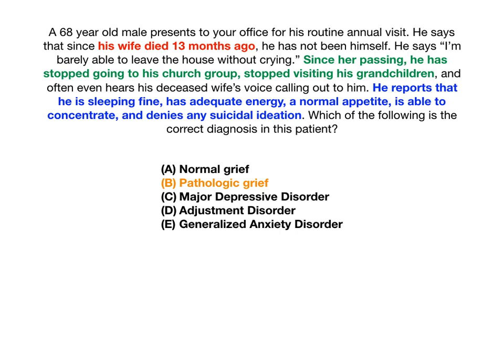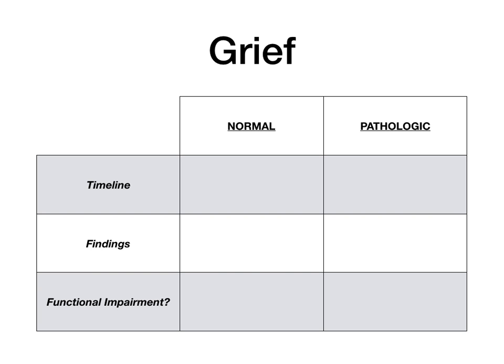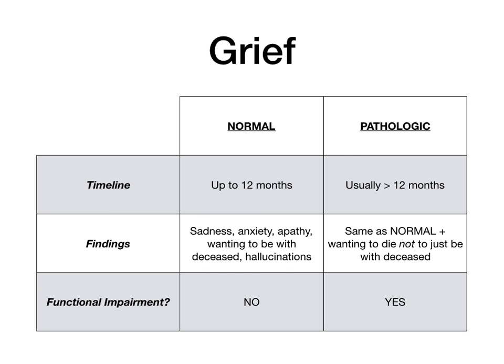Let's talk about D and E — adjustment disorder and generalized anxiety disorder — a bit later. But first, let's transition and talk about grief. We can separate grief into two types: normal grief and pathologic grief. This isn't completely black and white, but for USMLE and COMLEX purposes, you can make certain assumptions based on the timeline, the findings, and whether or not there's functional impairment.